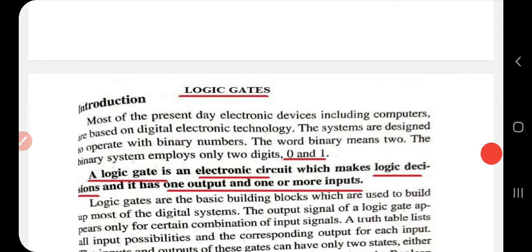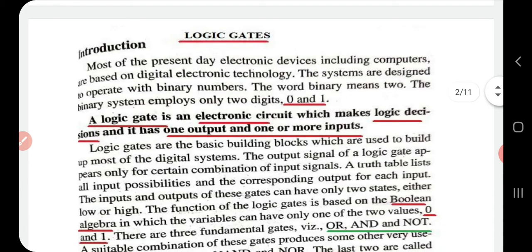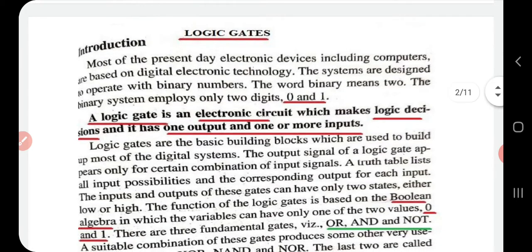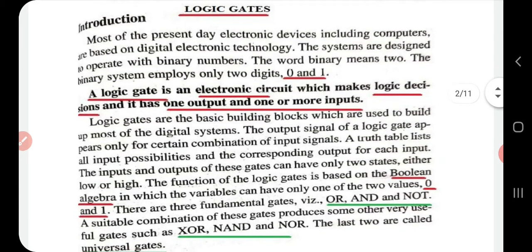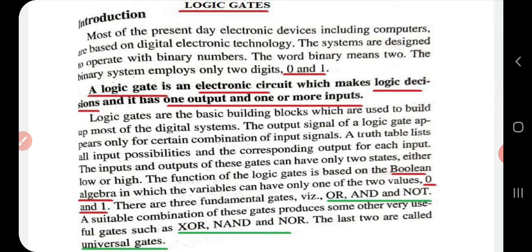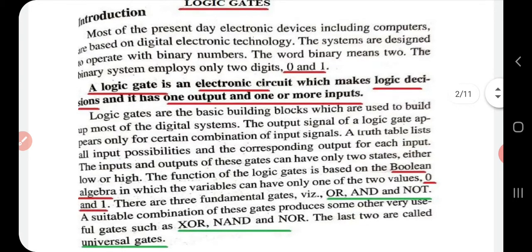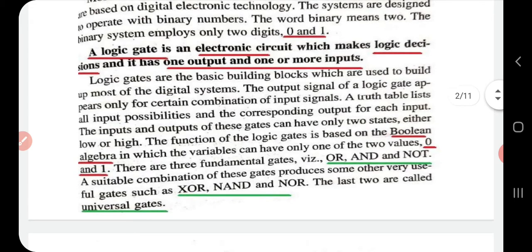There are three types of fundamental gates: NOT gate, AND gate, and OR gate. As an introduction, most present-day electronic devices, especially computers, are based on digital electronic technology. These systems are mainly designed to operate with binary numbers. The term binary means two, so any binary system uses only two digits: zero and one. A logic gate is an electronic circuit which makes logic decisions — it has one output and one or more inputs.